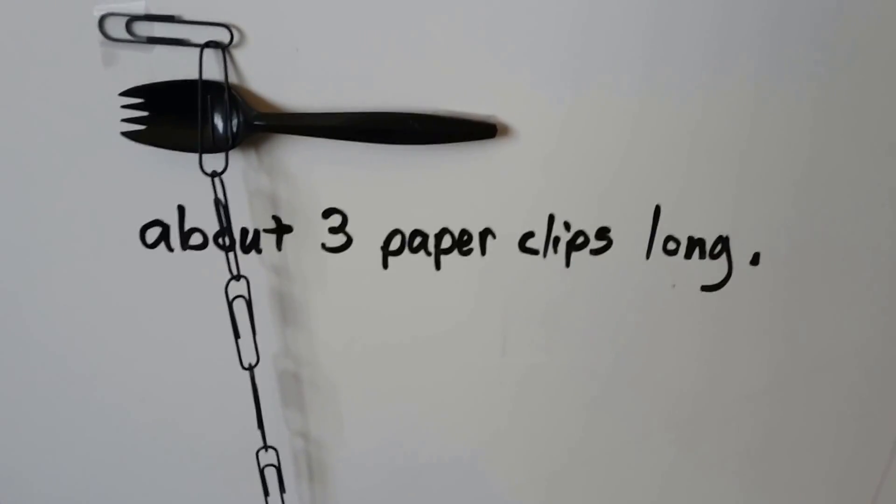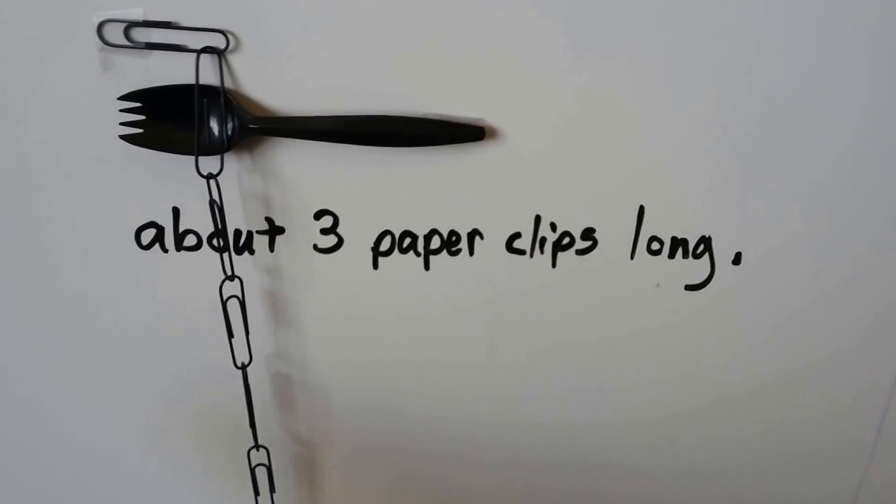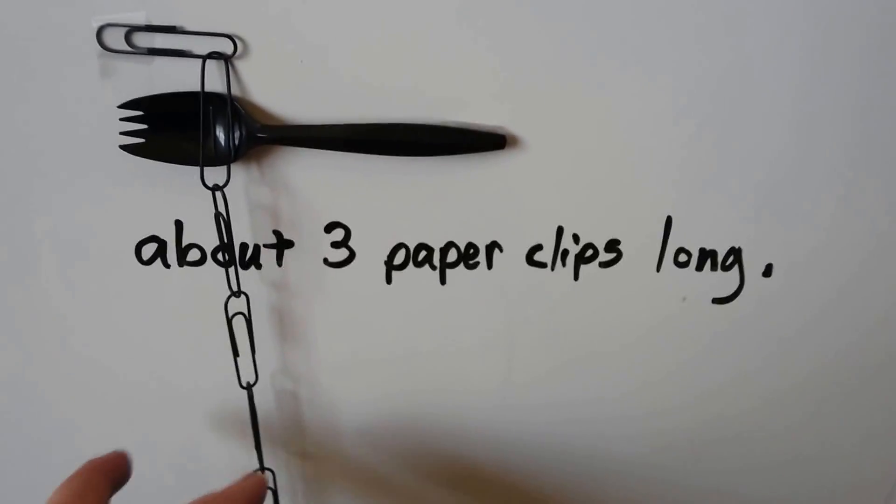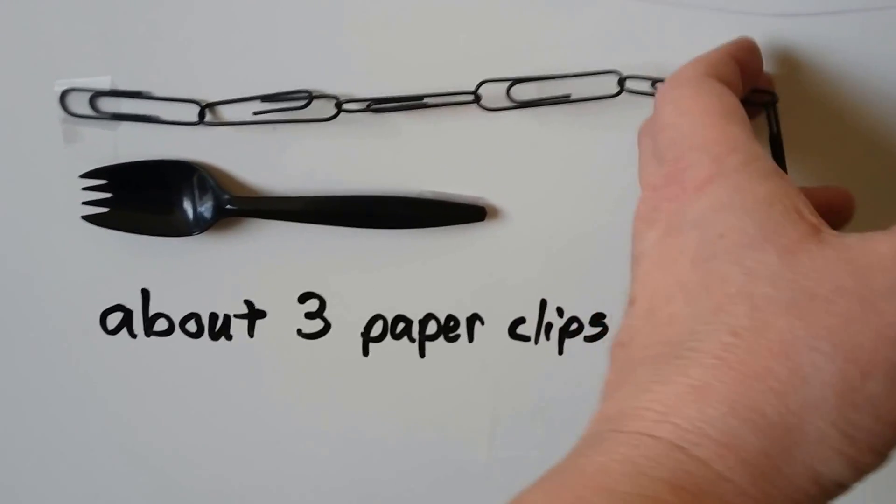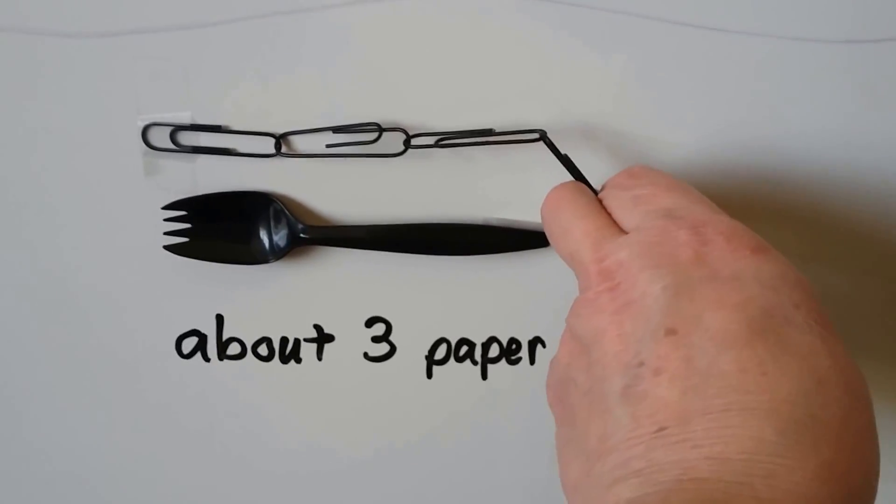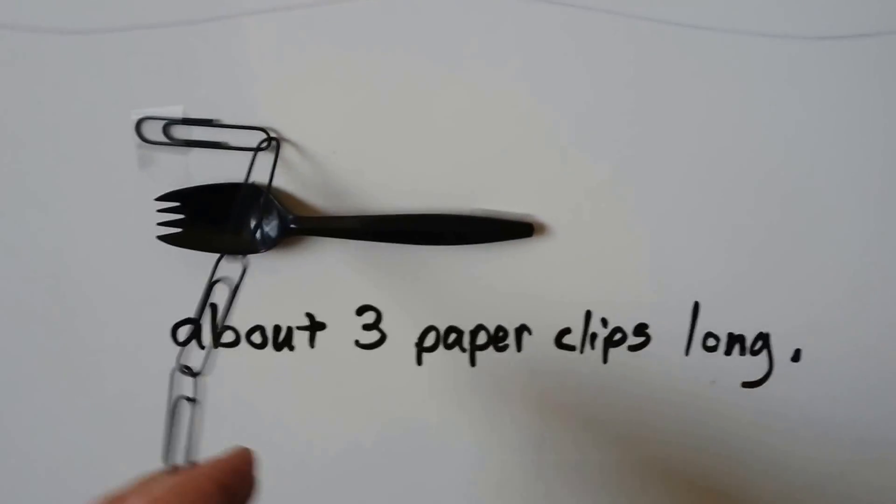This spoon fork, called a spork really, is about three paper clips long. We can count one, two, three. It's about three paper clips long.